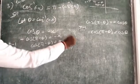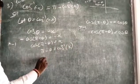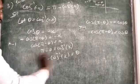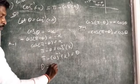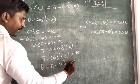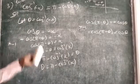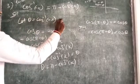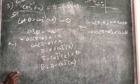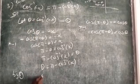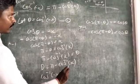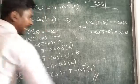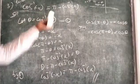Now rearranging: taking -θ to one side and cos⁻¹(x) to the other, it becomes θ = π - cos⁻¹(x). Now replacing θ with cos⁻¹(-x), since we assumed theta equal to cos⁻¹(-x) in equation 1, we get cos⁻¹(-x) = π - cos⁻¹(x). This is the required result, and both sides are verified to be equal.